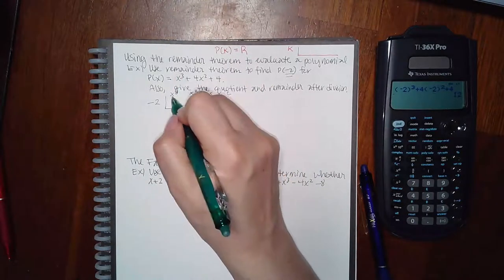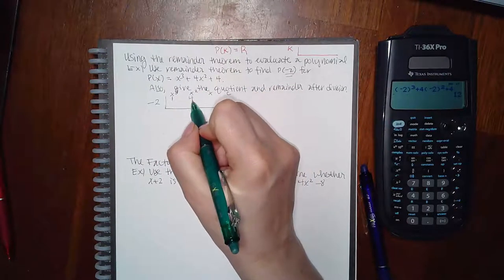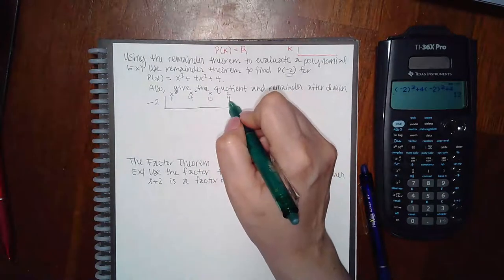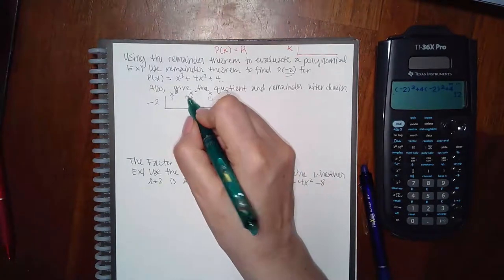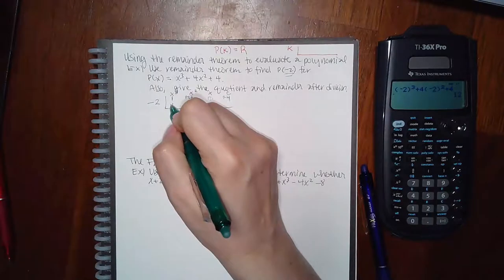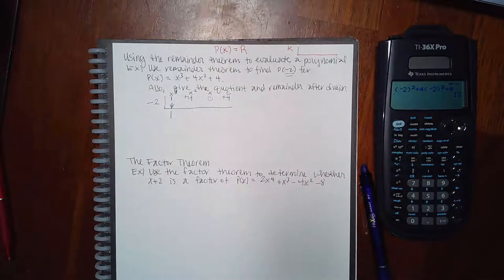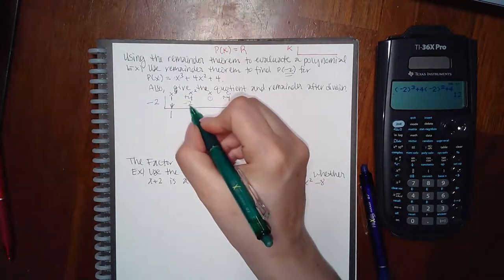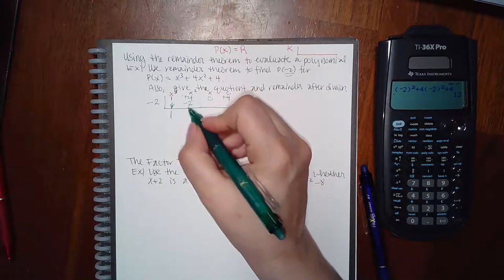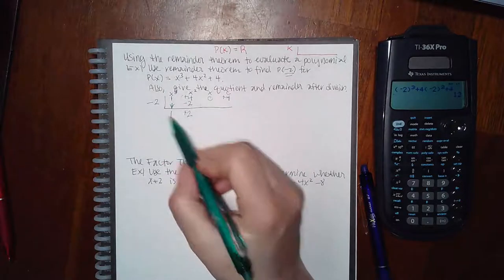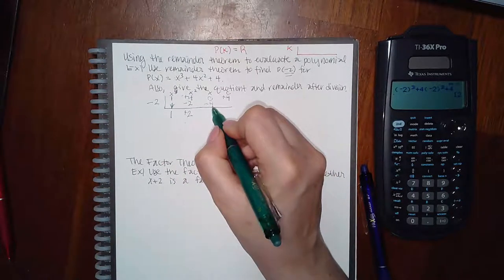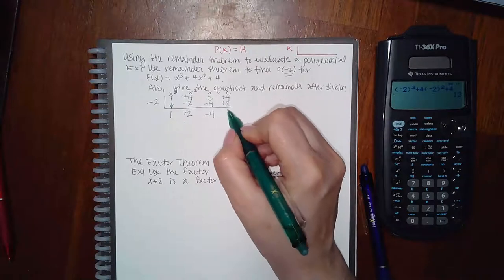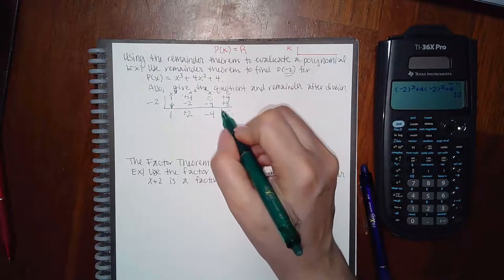The coefficient of x cubed is 1, the coefficient of x squared is 4, there is no x term so I fill that spot with 0, and the constant is positive 4. Bring down the first number automatically. Multiply: negative 2 times 1 is negative 2. Positive 4 minus 2 gives 2. Negative 2 times 2 is negative 4. Zero minus 4 is negative 4.